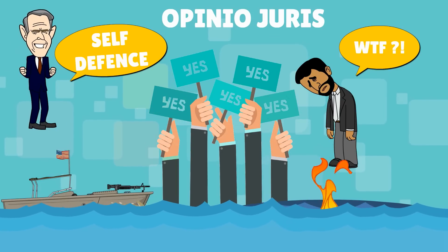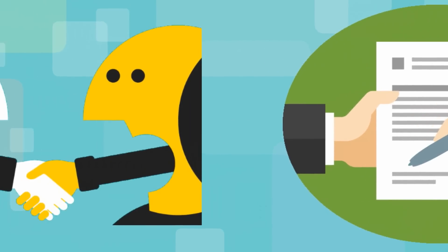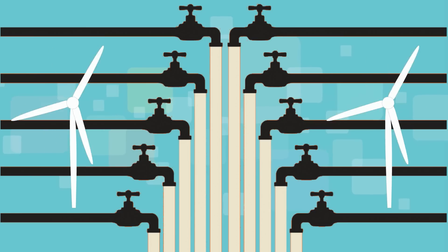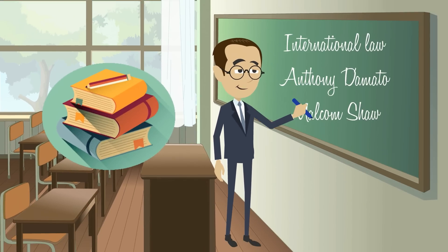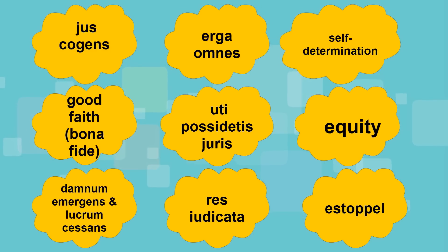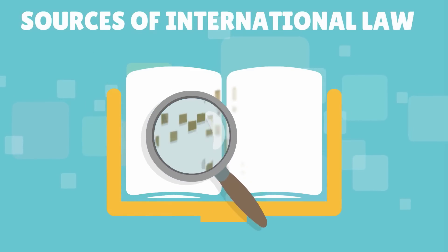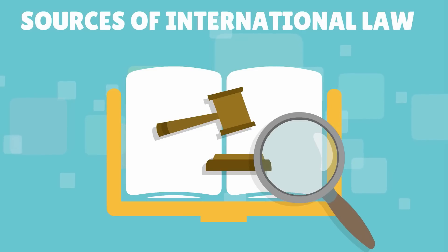For instance, the world accepts and believes that it is legal for a state to act in self-defense. In addition to treaties and customs, other sources of law exist, like the judicial decisions of international courts, juristic writings representing the teachings of the most highly qualified publicists, and the general principles of law recognized by civilized nations. While these are not formal sources, they can still play an important role as evidence of international law.